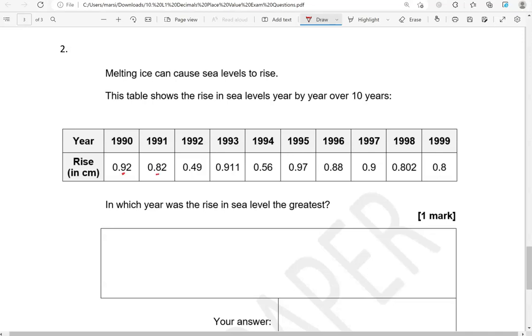Looking at the first digit after the decimal point, we've got 9, 8, 4, 9, 5, 9, 8, 9, 8, 8. So we're going to focus on the 9s because that's the highest.